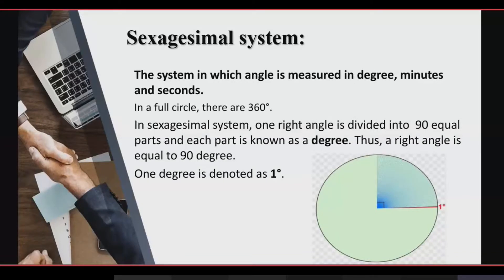If we talk about the whole circle, we divide it into three equal parts, then we divide each part with a degree. In this way, if we divide a right angle, we divide it into 90 equal parts with a degree. So we can say that in a full circle there are 360 degrees and in a right angle there are 90 degrees.